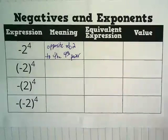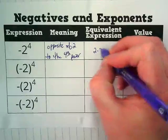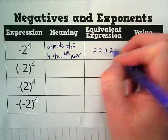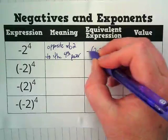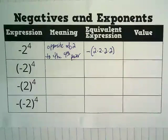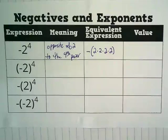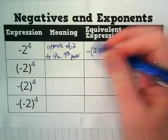An equivalent expression for that would be 2 times 2 times 2 times 2 in parentheses with a negative in front. There is an invisible 1 there. The invisible 1 is right here.